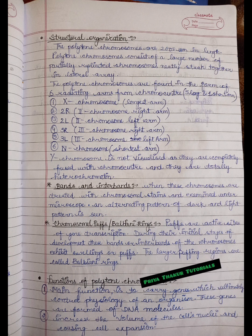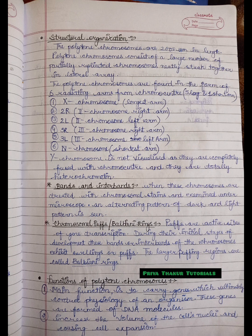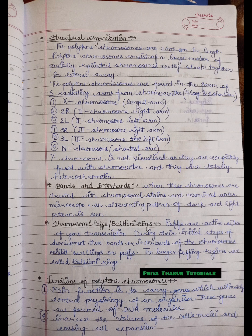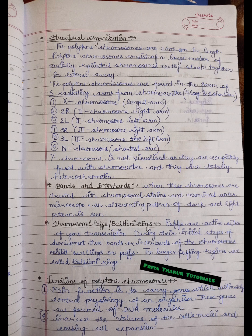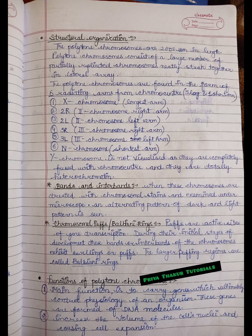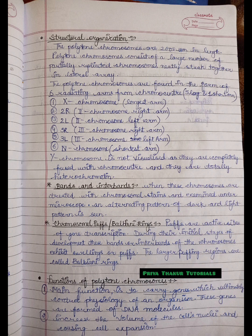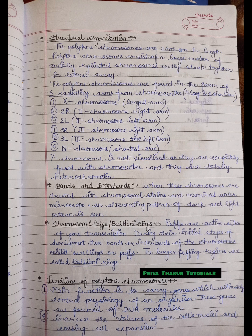The six radiating arms are: first, the X chromosome, which is the longest arm; second, 2R, the second chromosome right arm; third, 2L, the second chromosome left arm; fourth, 3R, the third chromosome right arm; fifth, 3L, the third chromosome left arm; and sixth, chromosome 4, which is the shortest arm.